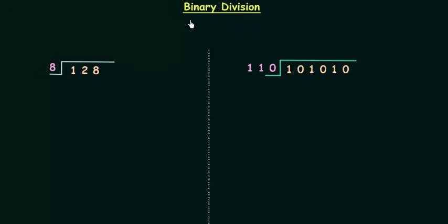We have already completed binary addition, binary subtraction and binary multiplication. In this lecture we will learn binary division. We want to divide 101010 by 110 and before this binary division we will first revise division of decimal numbers.